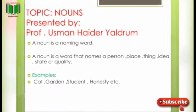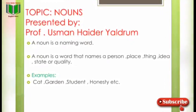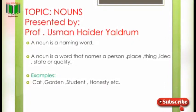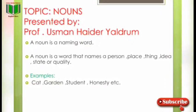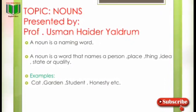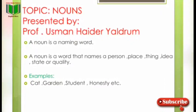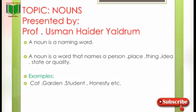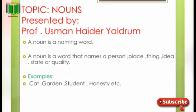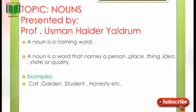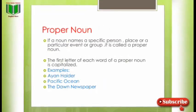A noun is a word that names a person, place, thing, idea, state or quality. Examples: cat, garden, student, honesty. Noun basically یہ ہے کہ دنیا میں کوئی بھی ایسی چیز نہیں ہے جس کا کوئی نام نہ ہو۔ اور اس کا مطلب یہ ہوا کہ نام ہی noun ہوتا ہے — کسی بھی شخص، جگہ یا چیز کے نام کو ہم noun بولتے ہیں۔